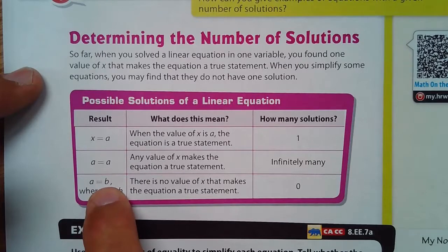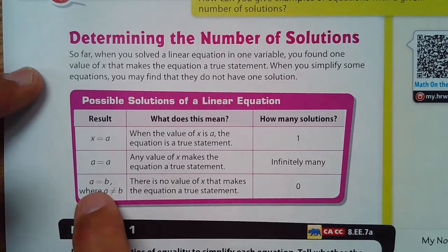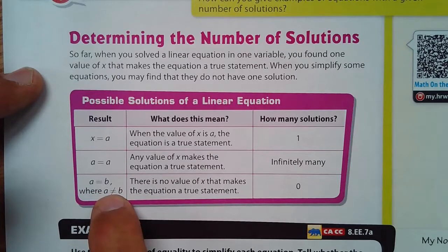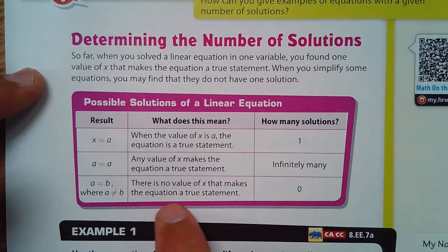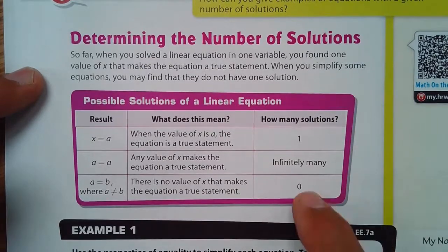And then when you have a equals b, like 3 equals 5, that doesn't make any sense. And where a, and this means not equal to, that means equal to, that means not equal to. So you can't pick 3 equals 3. So 5 equals 3 or something. That means no value of x makes the equation a true statement, and there are zero solutions.